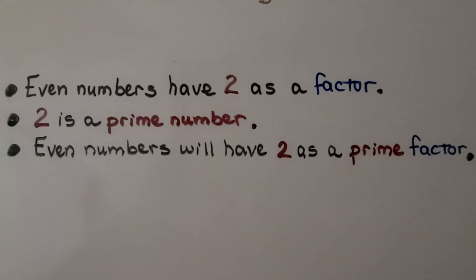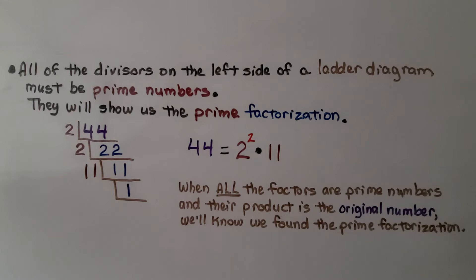Even numbers have 2 as a factor. 2 is a prime number, so even numbers will have 2 as a prime factor. All of the divisors on the left side of the ladder diagram must be prime numbers, and they'll show us the prime factorization.